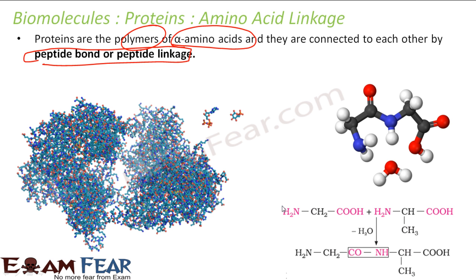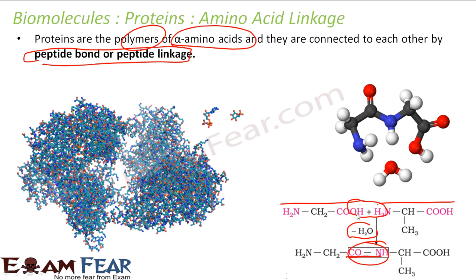This is the amino acid. They are linked together and water comes out. What happens is H from the NH2 here and OH from the COOH here comes out, so you get CO-NH. This bond is nothing but peptide linkage. Water came out and this is the link that is formed.